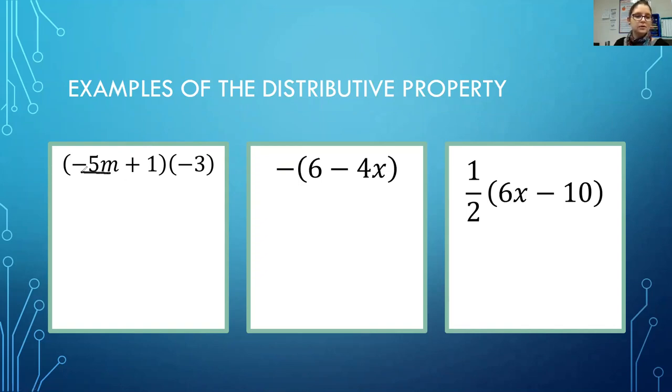I'm going to underline the negative 5m. I'm going to underline the negative 3 so that I know they go together. Negative 3 times negative 5 is a positive 15, bring down my m. Negative 3 times positive 1 is negative 3. So my final answer is 15m minus 3.